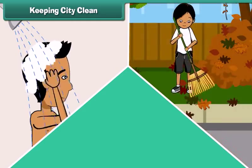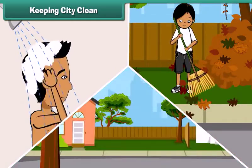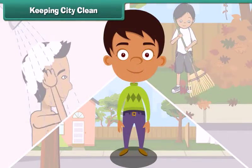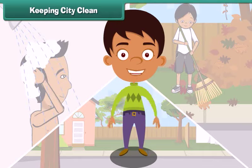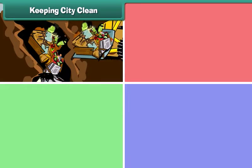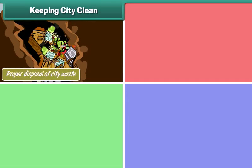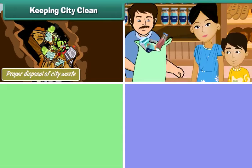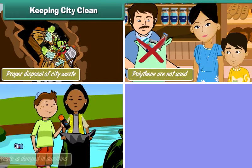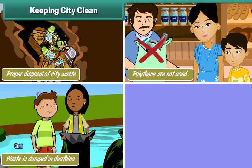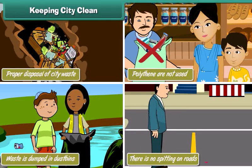It is not enough to maintain personal, neighborhood, and community hygiene. It is also our responsibility to keep our city clean. We can do this by ensuring proper disposal of city waste, avoiding non-biodegradable substances like polythene, dumping waste in dustbins, and not spitting on roads.